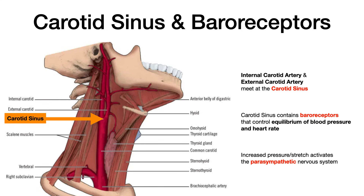If you look at an anatomical picture, the internal carotid artery and external carotid artery meet at a bifurcation known as the carotid sinus. The carotid sinus contains baroreceptors — the prefix baro- meaning pressure — so these are literally pressure receptors. The function of the carotid sinus baroreceptors is to control the equilibrium of blood pressure and heart rate.